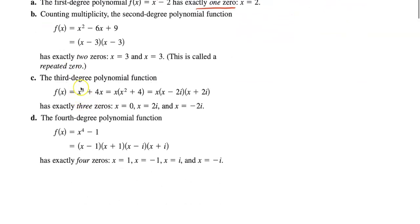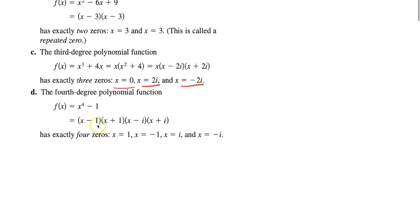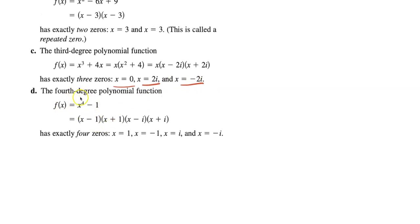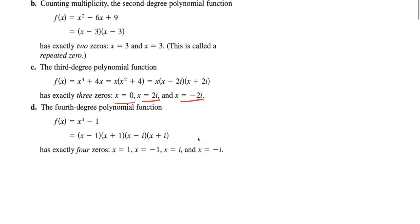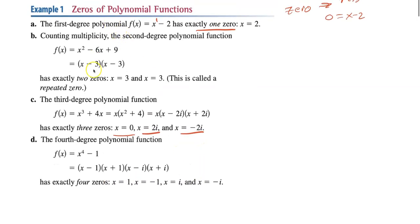If I give you x cubed, then you should get at most three zeros. In this case, two of them are imaginary — that's fine. It's complex roots, not real roots. So we have three complex roots. If you get x to the fourth, you should get four zeros. So if I ask you how many complex zeros does this thing have, you just look at the highest power. That's the fundamental theorem of algebra. The highest power is the number of complex zeros.